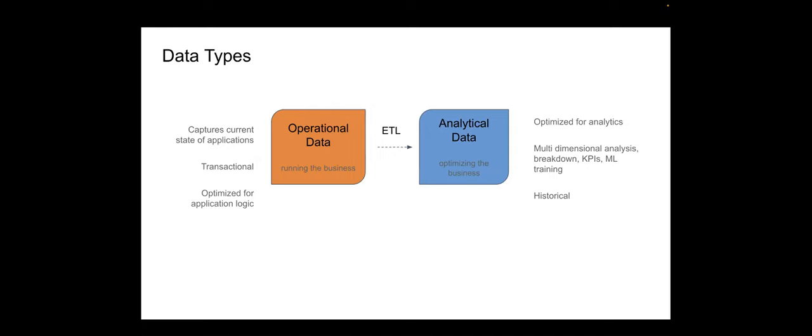Before getting into data mesh and the application of the semantic layer, I want to take a step back and walk through the different types of data we have in organizations. The world of data is divided into two spaces. The first is operational data — the data sitting behind your applications, services, or APIs — which reflects the current state of the business. This is where we capture all transactional data and optimize infrastructure for application logic, running create, update, and delete operations.